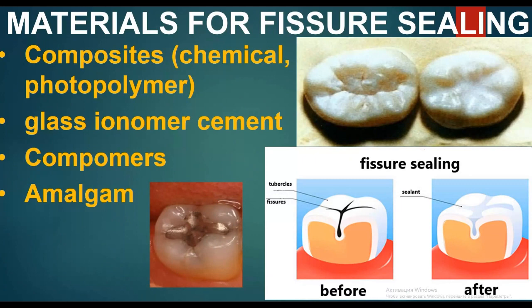Materials for fissure sealing can be composite (chemical or photopolymer), glass ionomer cement, compomer, or amalgam. In the picture we see fissure sealing — the occlusal fissures before and after fissure sealing when sealant is applied.